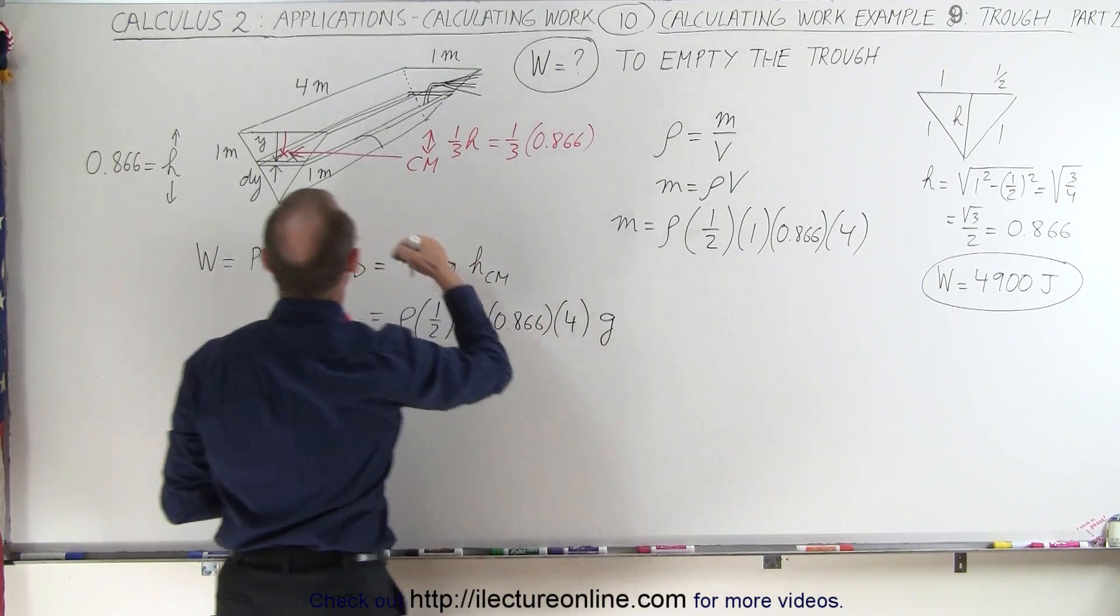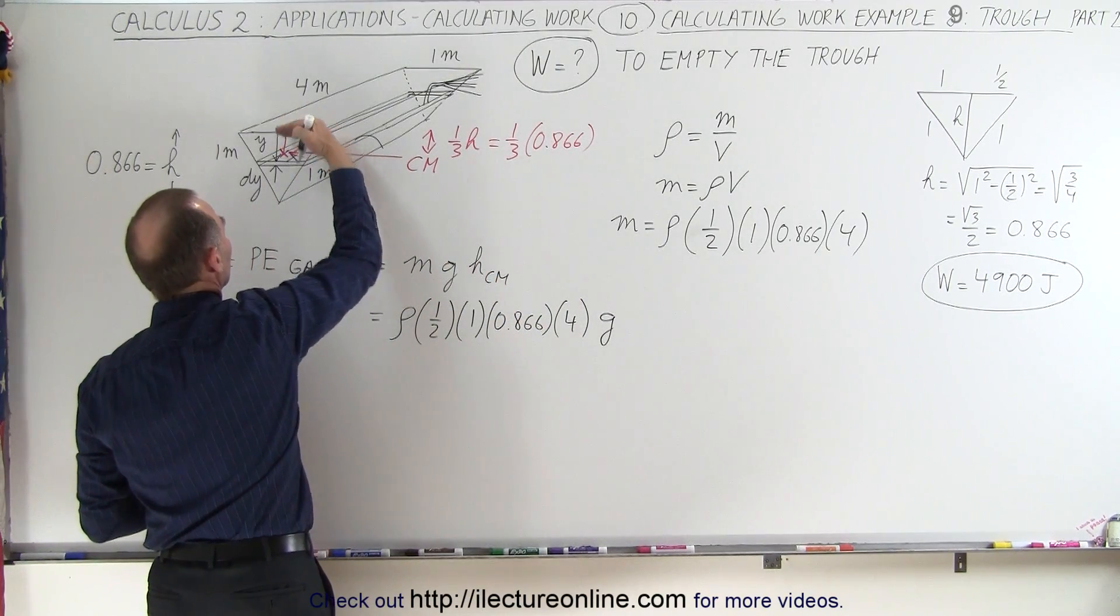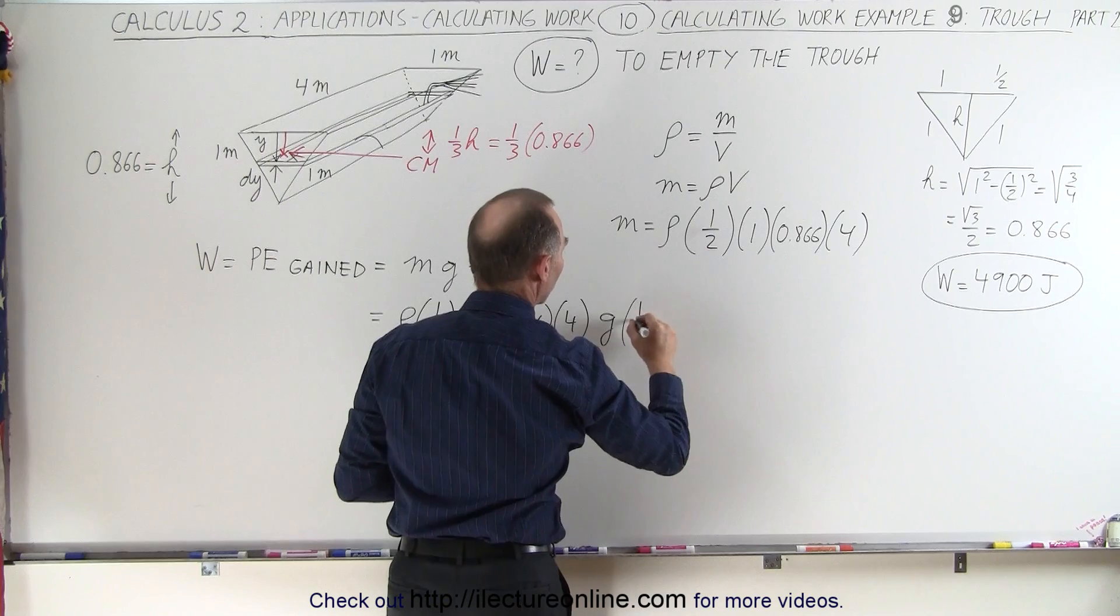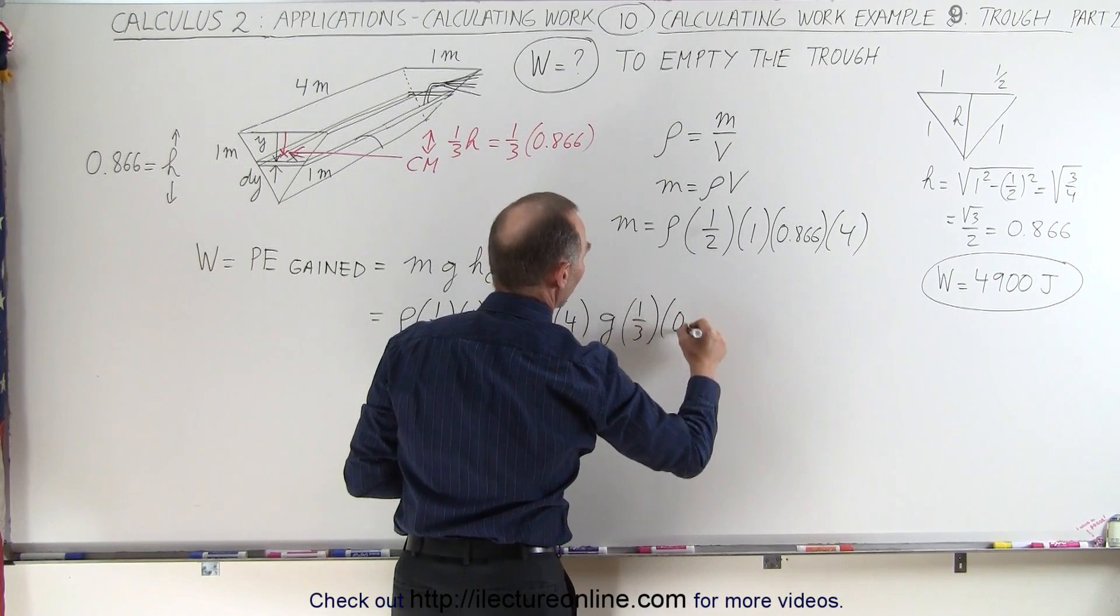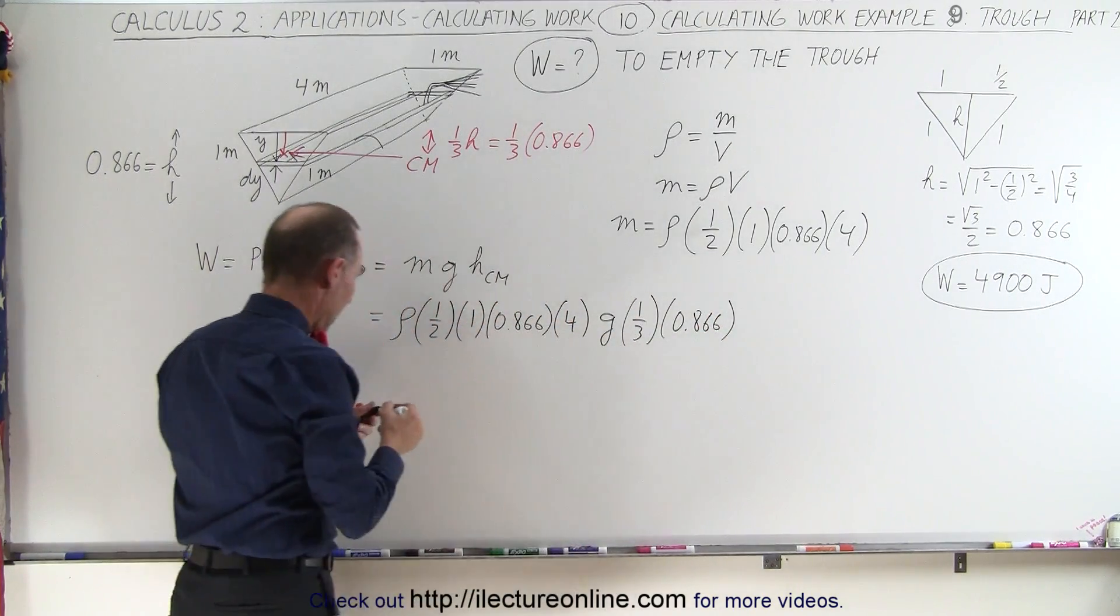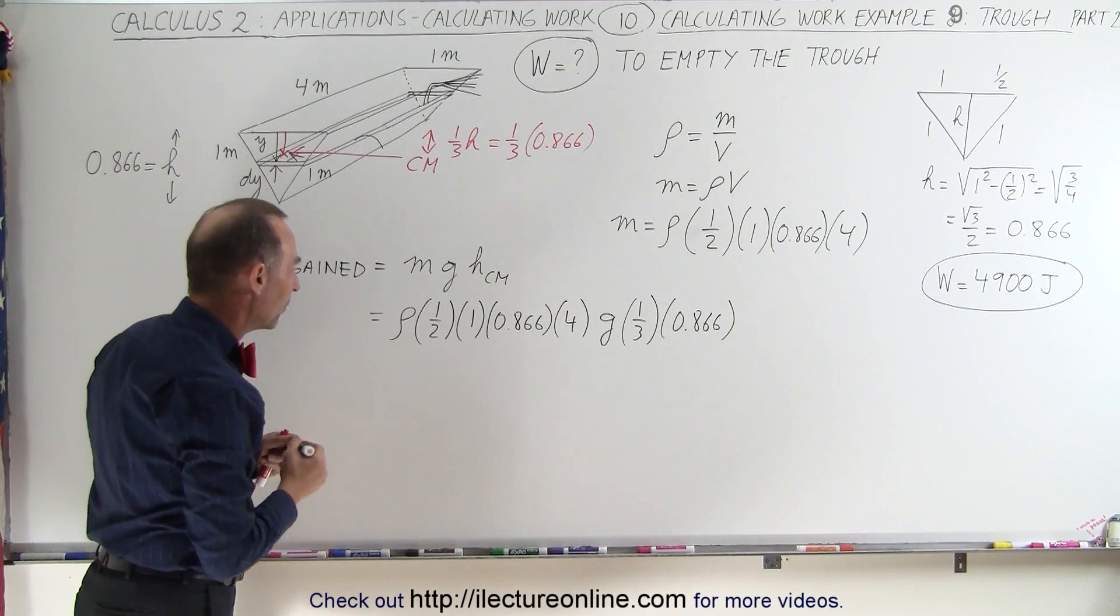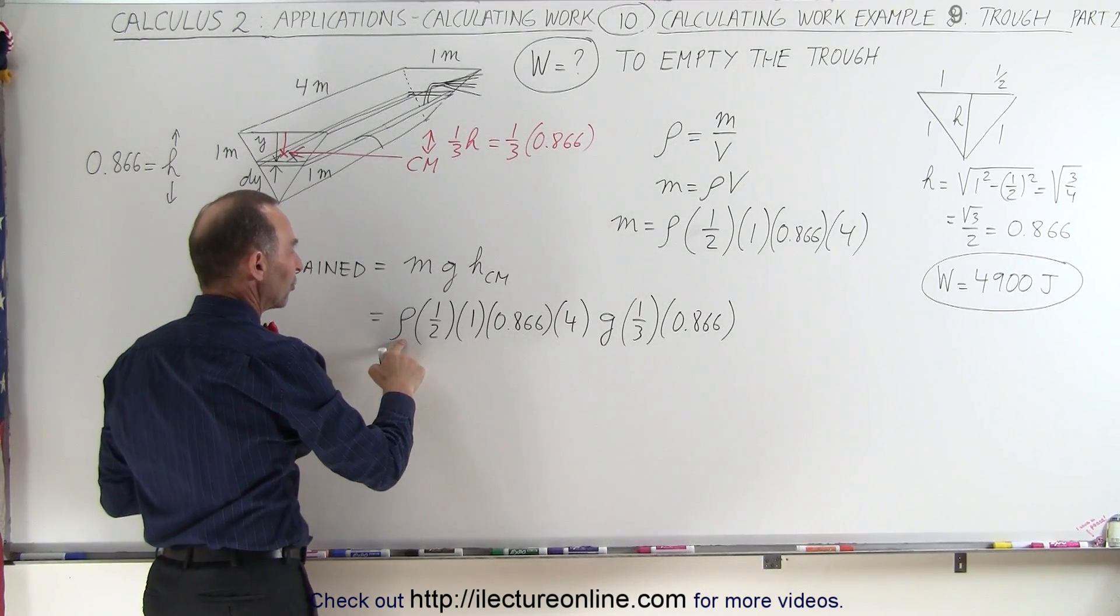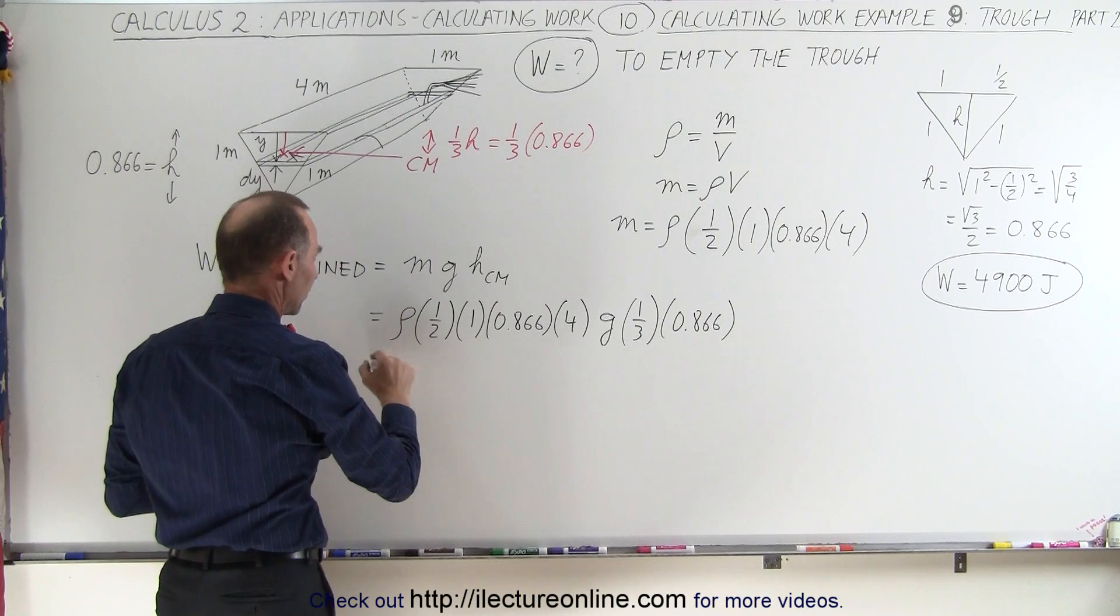Times g, times h to the center mass, it's one-third distance from there to there, so it would be one-third times 0.866. All right.